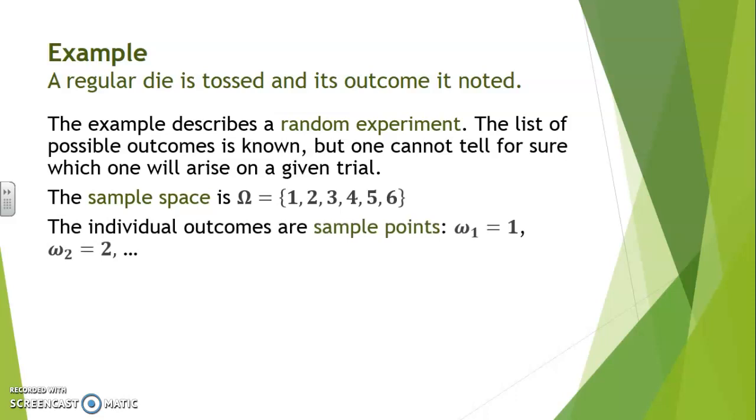The individual outcomes are called sample points. So one could be called omega one, the first of the outcomes, omega two is two. Of course we could have said omega six is one as well. These are just names that we're giving to the outcomes themselves.